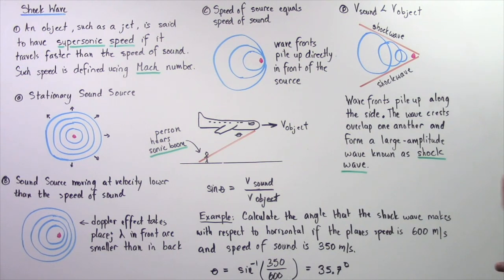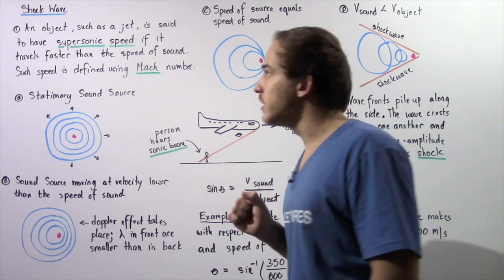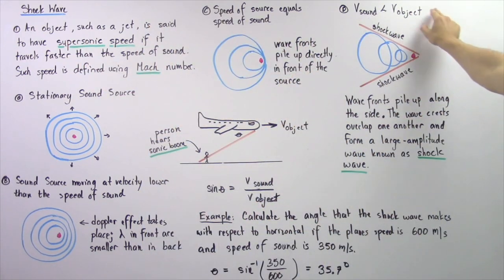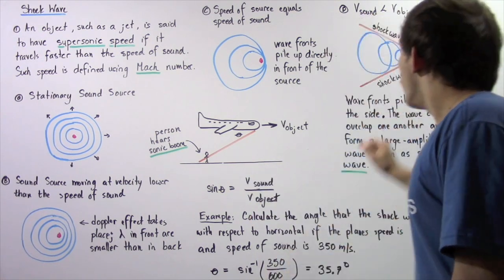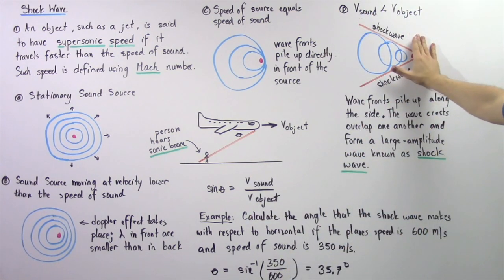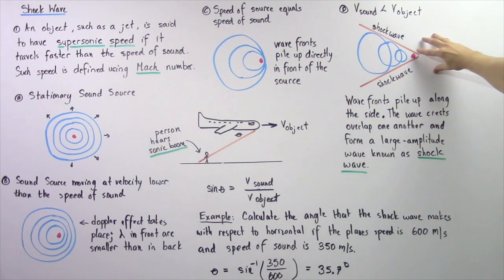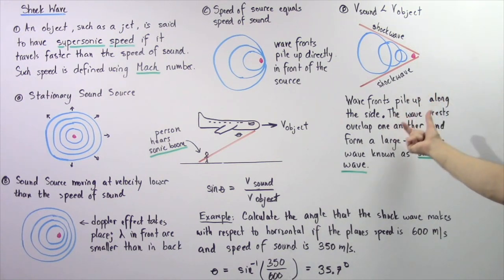And finally, let's move on to case D. What happens if our object is traveling with supersonic speed? In other words, the speed of the object is greater than the speed of sound. Well, the following diagram of the sound waves will be observed. Notice the sound waves created will be in back of our moving object, and the wave fronts pile up along the sides as shown.